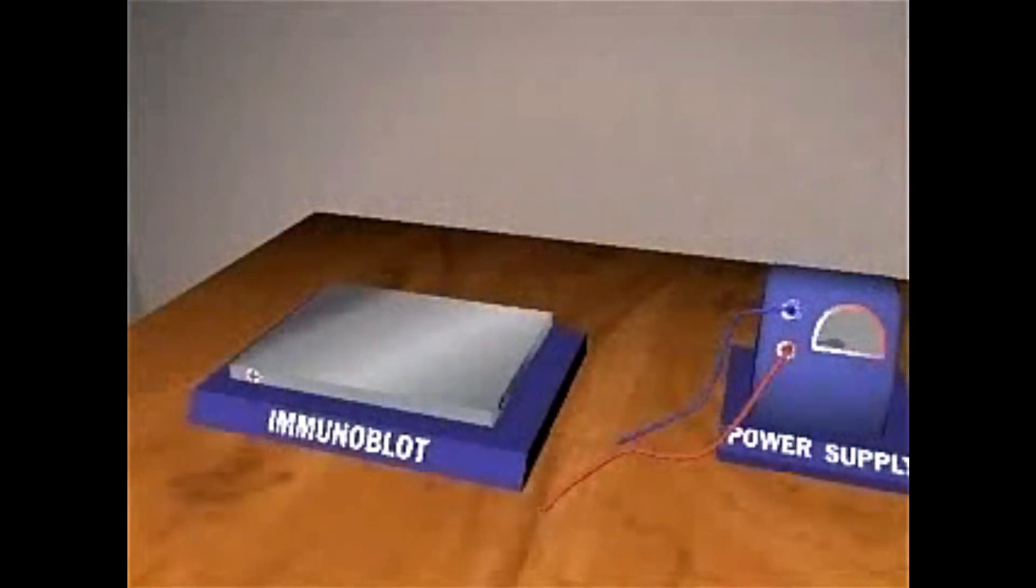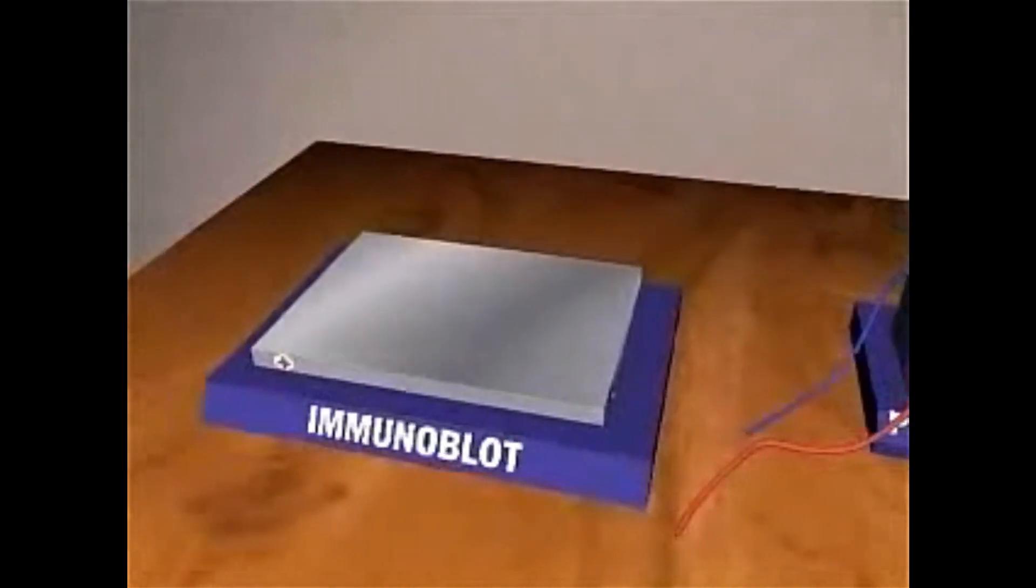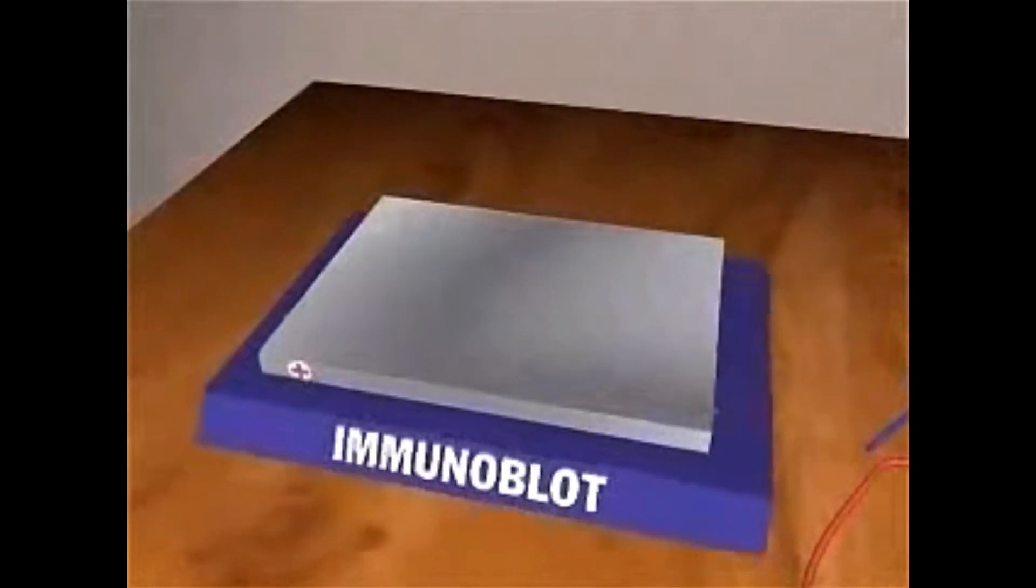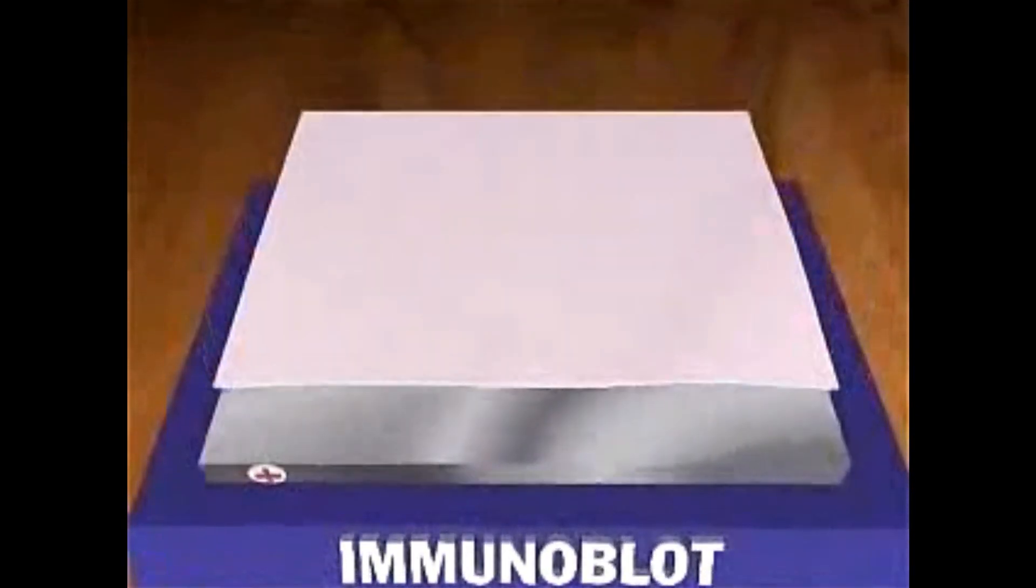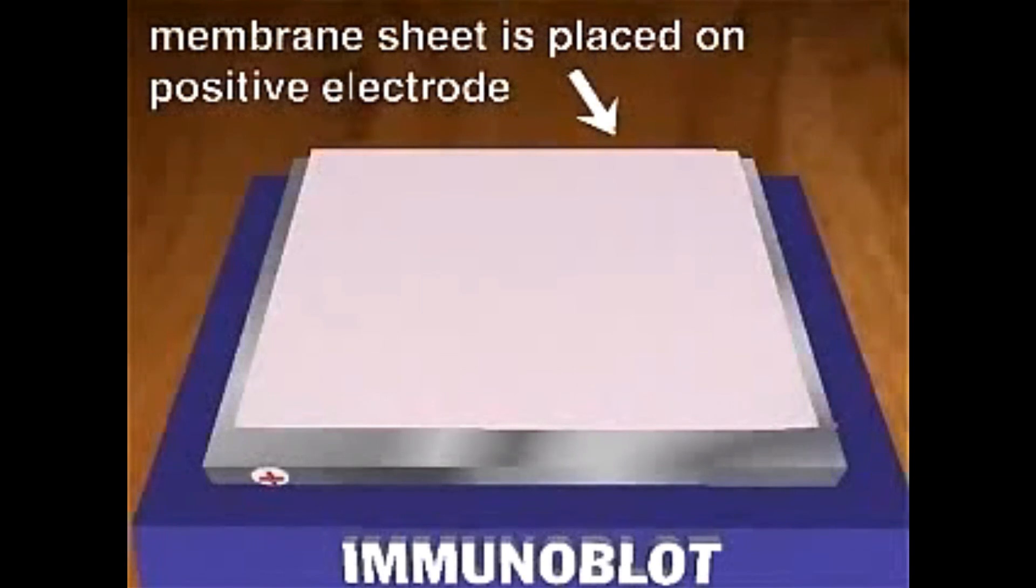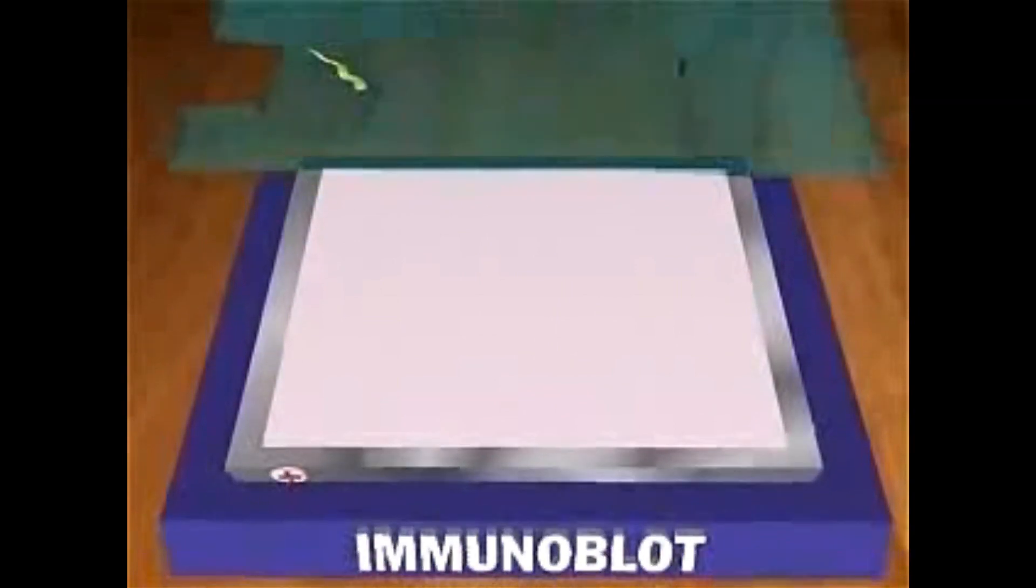Immunoblotting combines the superior resolving power of SDS polyacrylamide gel electrophoresis with a highly sensitive antibody binding assay to find a specific protein in a mixture of different proteins. Proteins are first separated on a polyacrylamide gel. Then in the blotting step, the proteins are transferred onto a nitrocellulose membrane.